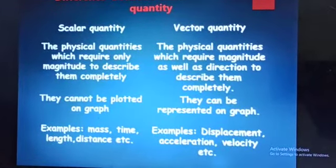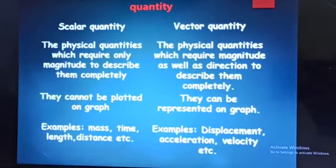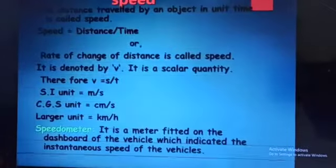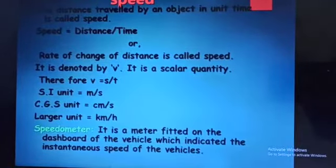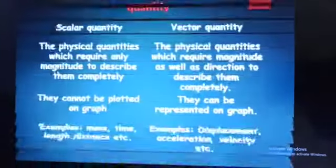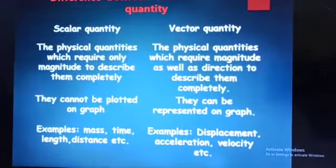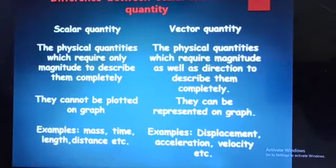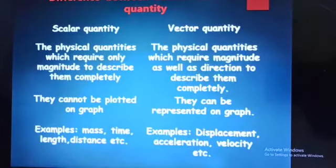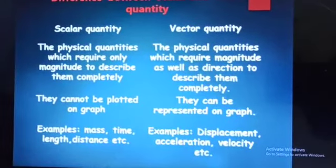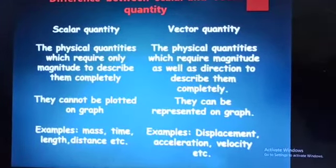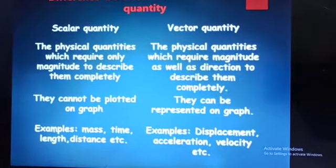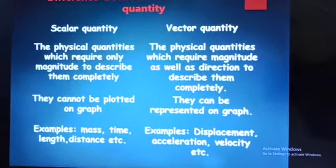Scalar quantities cannot be plotted on a graph, whereas vector quantities can be plotted on a graph. Examples of scalar quantities are mass, time, length, and distance. For instance, we cannot plot mass on a graph.